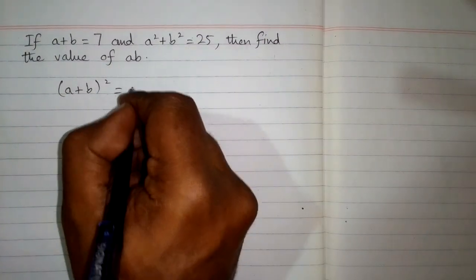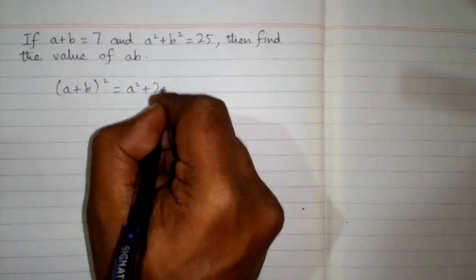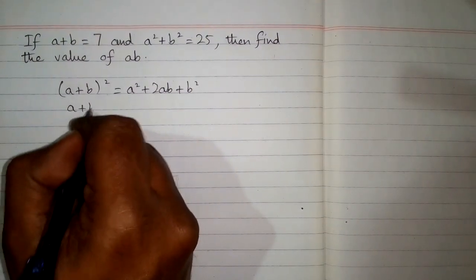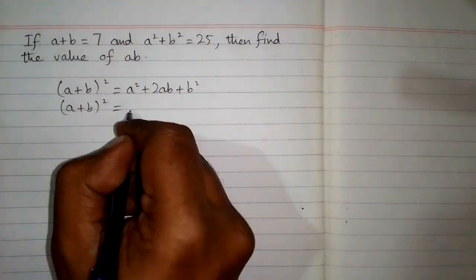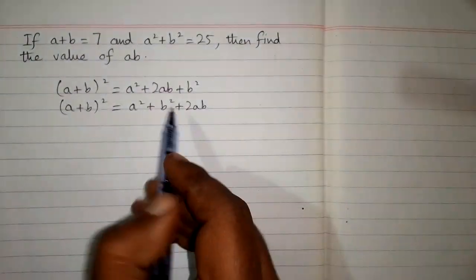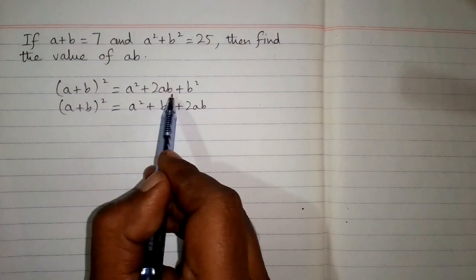equals a² + 2ab + b². Now (a+b)² can be written as a² + b² + 2ab by commutative law, since 2ab + b² equals b² + 2ab.